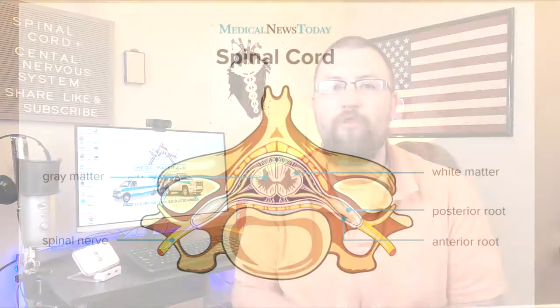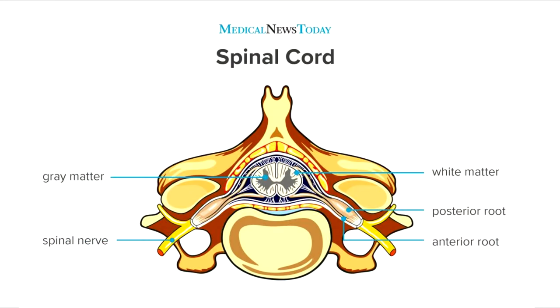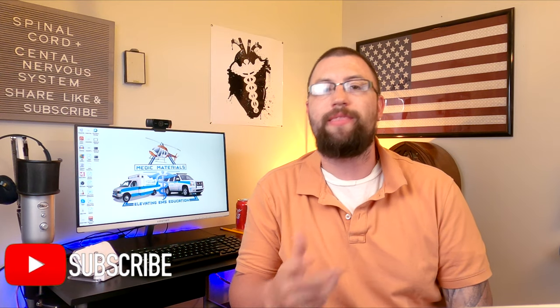Now let's take a cross section of the spinal cord. There are four main structures here that we need to mention. The first is gray matter — the dark butterfly-shaped region of the spinal cord made up of nerve cell bodies. Second is the white matter, which surrounds the gray matter in the spinal cord and contains neural cells coated in myelin. The myelin makes nerve transmission occur that much more quickly. Nerve cells in the gray matter are not heavily coated with this myelin.